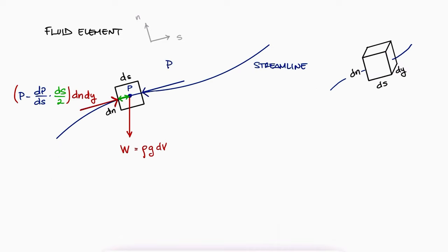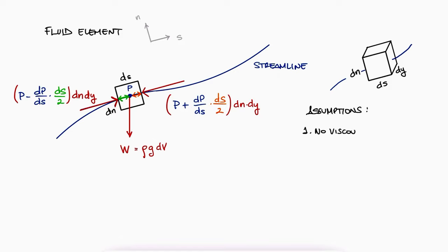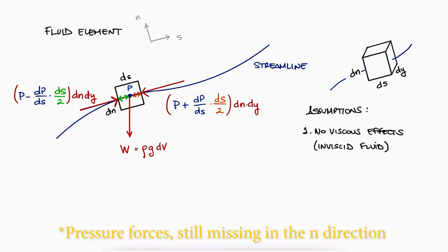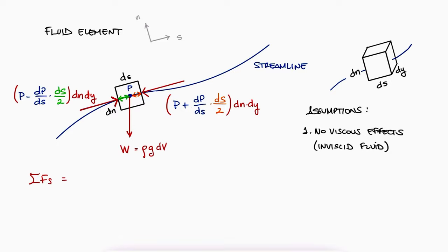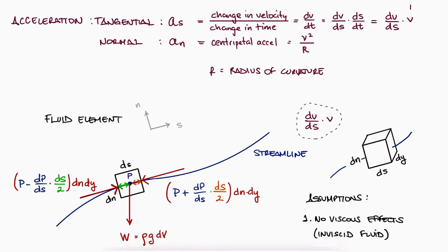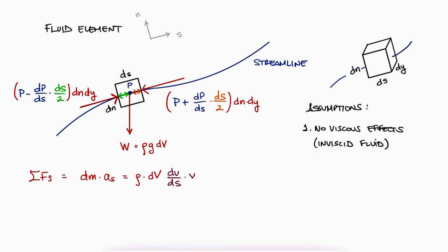In the same way, the pressure on the right side would be p plus delta_p, and the force is that pressure times the area dn dy. We will now make a big assumption: we will neglect viscous effects. Notice that if we were taking into account viscosity, there would be an uneven sum of forces in the s direction due to forces on the top and bottom surfaces. When we don't take viscosity into account, we call this an inviscid fluid. With this free body diagram, we can write the sum of forces in the s direction equal to dm times a_s, and substituting a_s and mass as density times dV, we have the sum of forces equal to rho dV times v dv/ds.